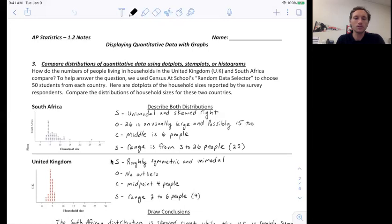Now let's compare the United Kingdom. United Kingdom. The shape is roughly symmetric. There's no tail being stretched out either way. And it is definitely unimodal. You can see that one peak. There appear to be no outliers. The midpoint or the middle is going to be, count to 25, it's going to be in this area here. So it is four people. And the range goes from two to six people. So it has a range of four.